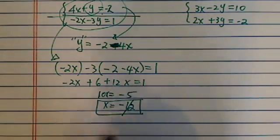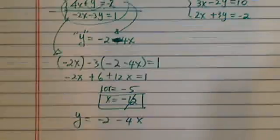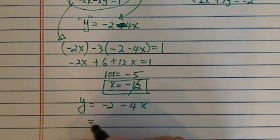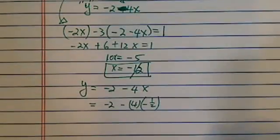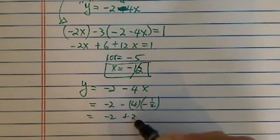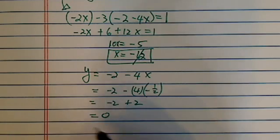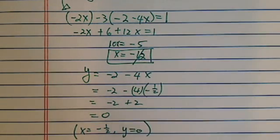Once you get x equal to minus one-half, you can substitute it back into one of the equations. But a quicker way is this — you already solved for y. y is equal to minus 2 minus 4x, so all you have to do is substitute in: minus 4 times minus one-half. You have minus 2 plus 2, which equals 0. So the solution is x equals minus one-half, y equals 0.